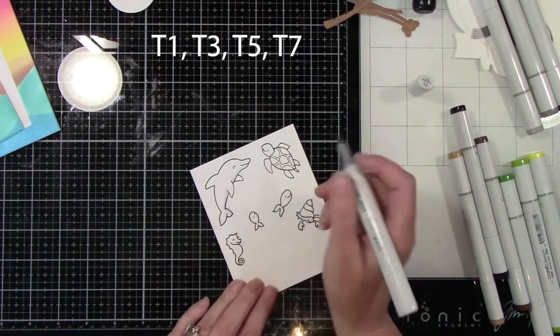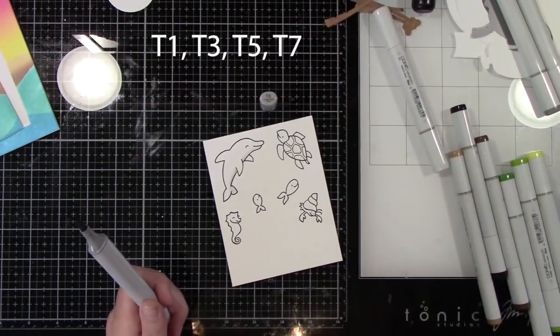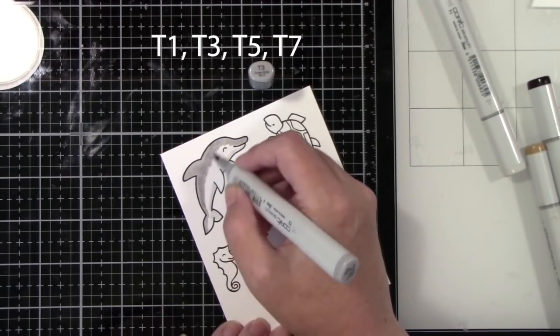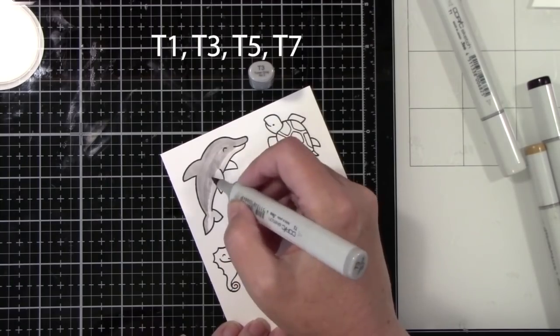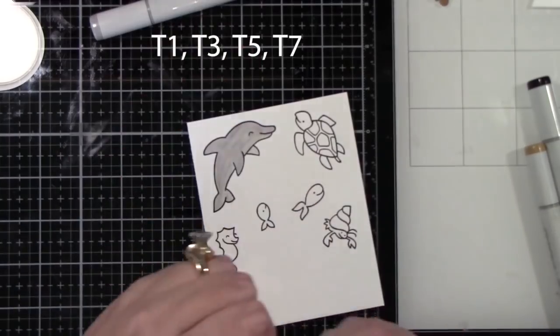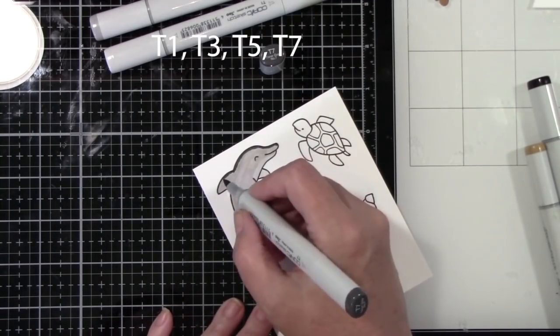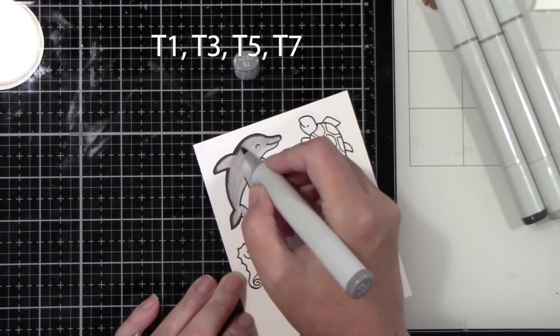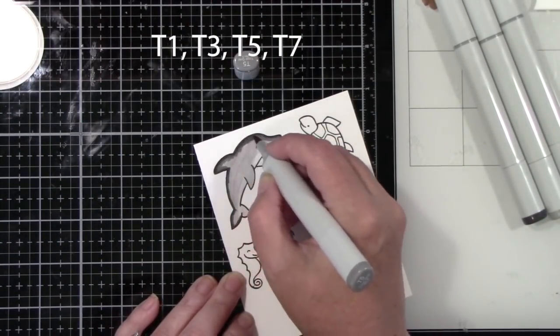Now here are the cute critters that are the star of this card. And this is from Critters in the Sea. I've got the stamps and the die. And I am coloring them with Copic markers. And for the dolphin, it is T1, T3, T5, and T7. Lawn Fawn's jet black ink is Copic friendly, so perfect for Copic coloring.